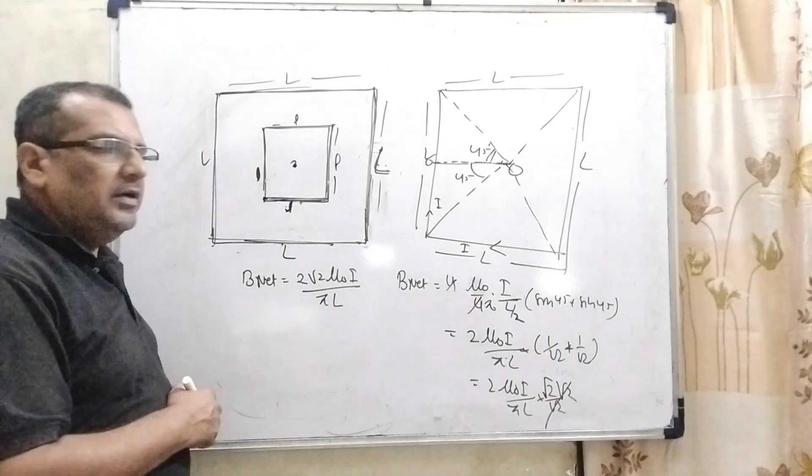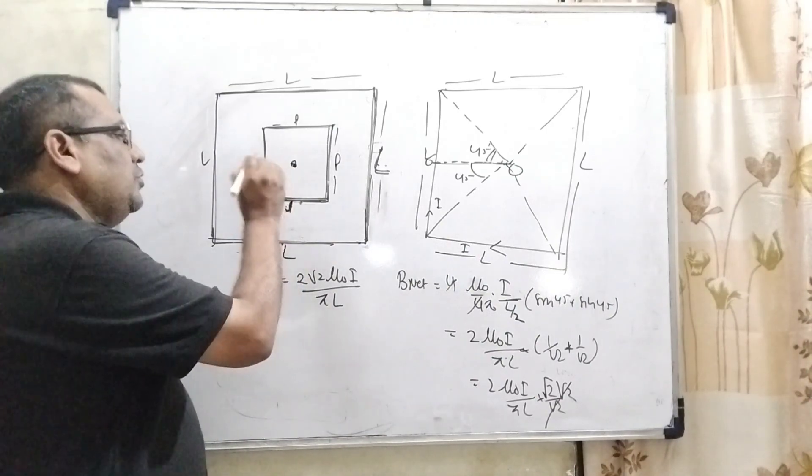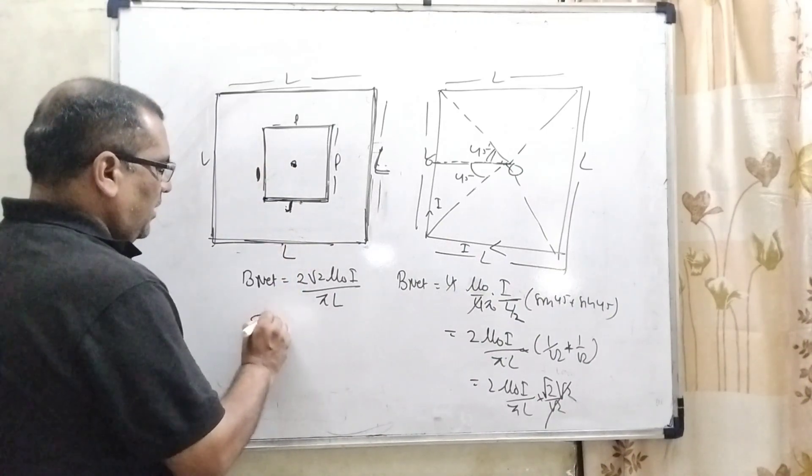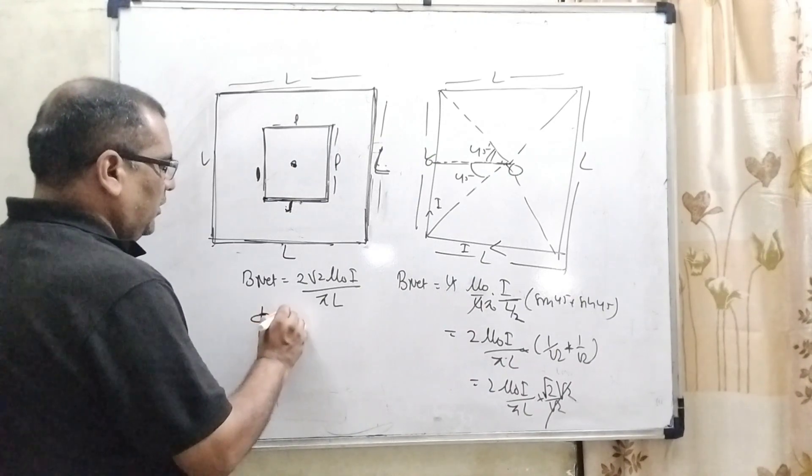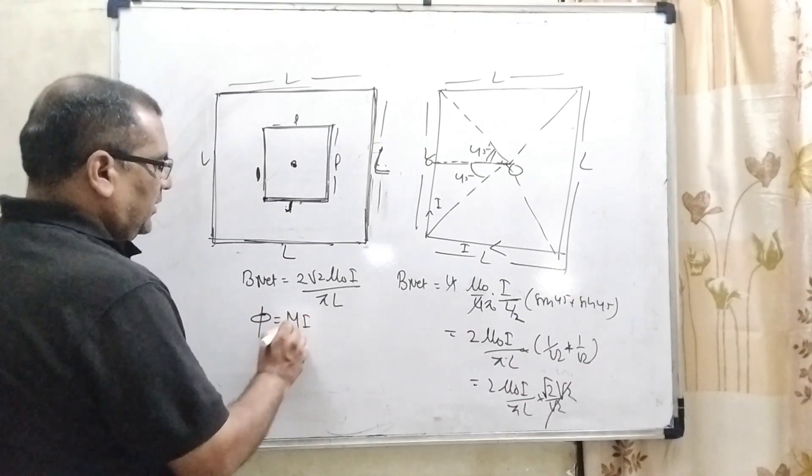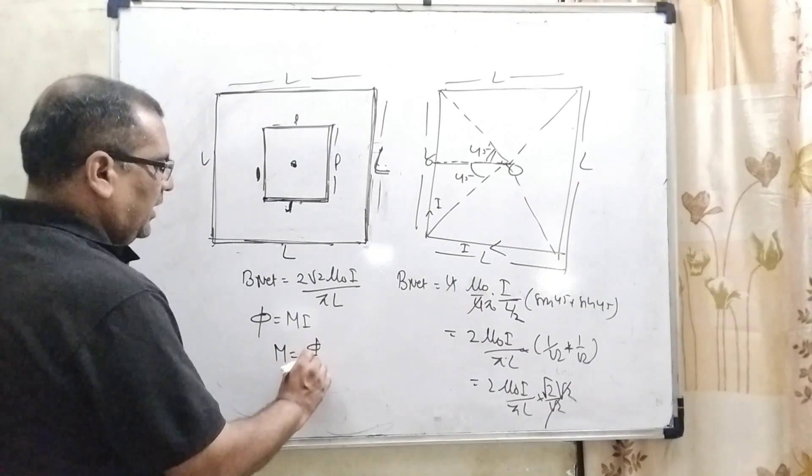So here we get net magnetic field, but we have to find out the mutual induction. What is the formula of mutual induction? Phi equals M into I. Then M means mutual induction equals phi by I.